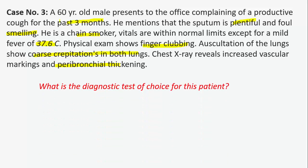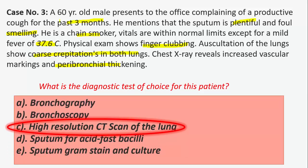The diagnostic test of choice is high-resolution thoracic CT, which is the gold standard, showing signet rings and is 87–97% sensitive and 93–100% specific. Other tests that can be done include sputum culture, CBC, LFTs, immunoglobulin panels, serum IgG levels, and sweat chloride if cystic fibrosis is suspected. However, the gold standard remains high-resolution CT of the lungs.